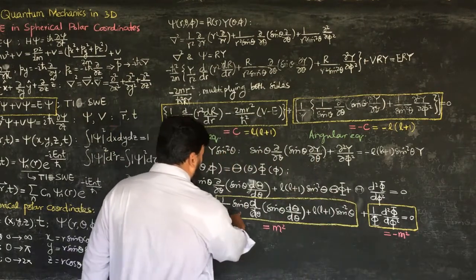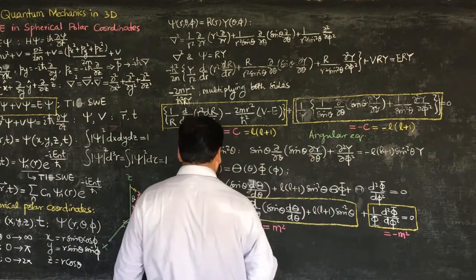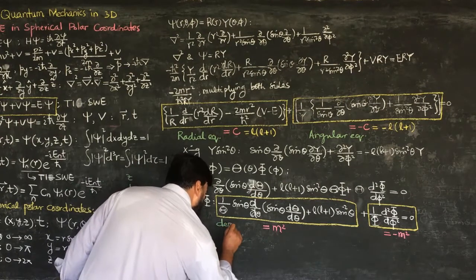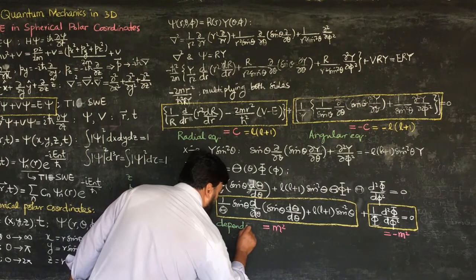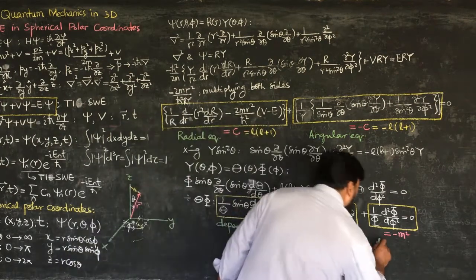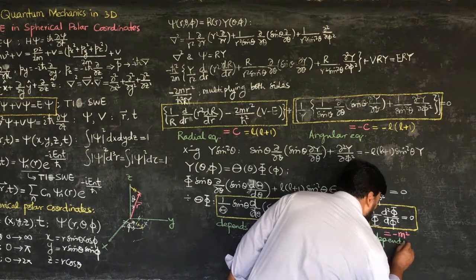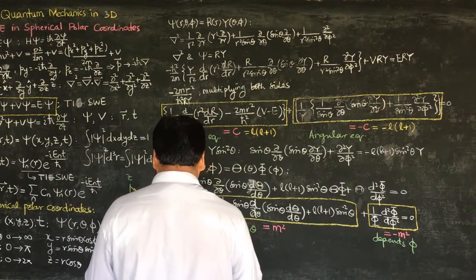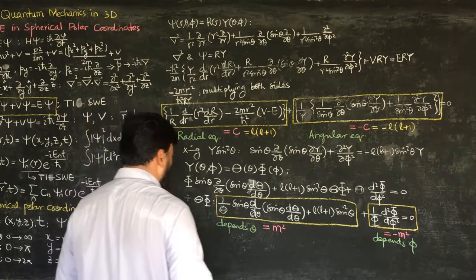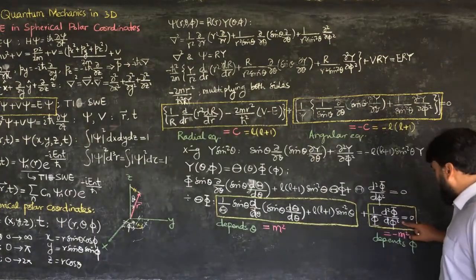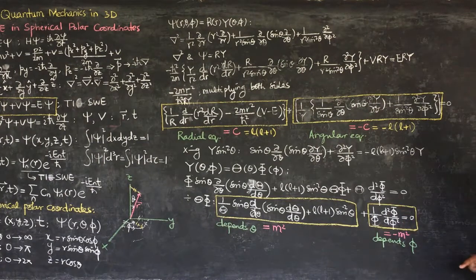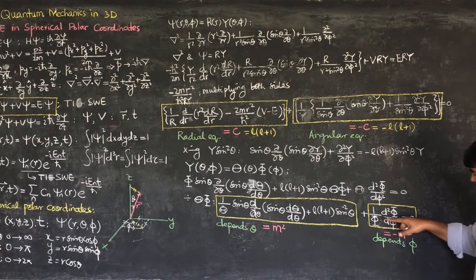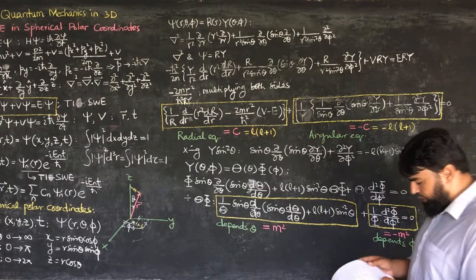Both the θ-equation and the φ-equation are angular equations since θ and φ are angular coordinates. We now have two separate ODEs to solve. Starting with the simpler φ-equation: 1/Φ · d²Φ/dφ² = -m², which can be rewritten as d²Φ/dφ² = -m²·Φ. Keep in mind that Φ is a wave function.